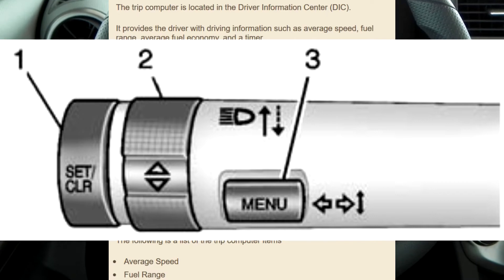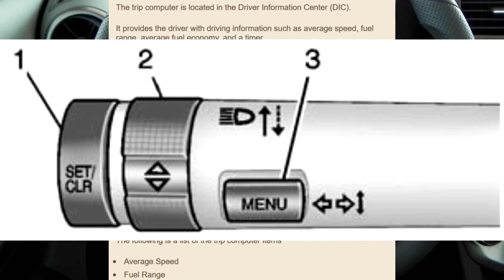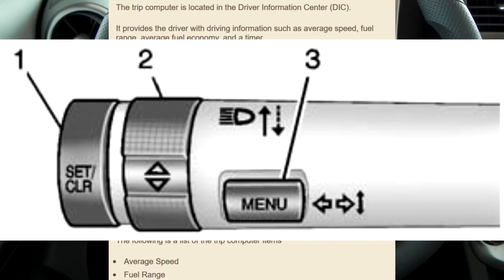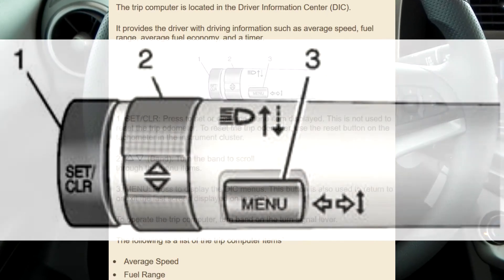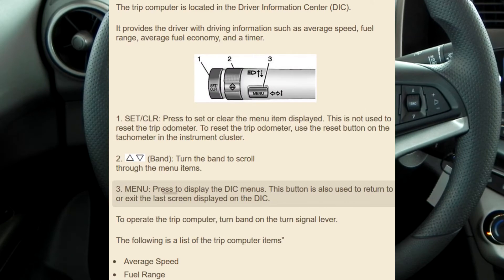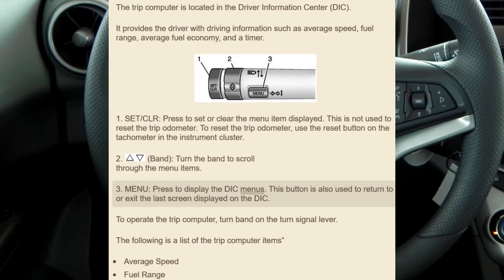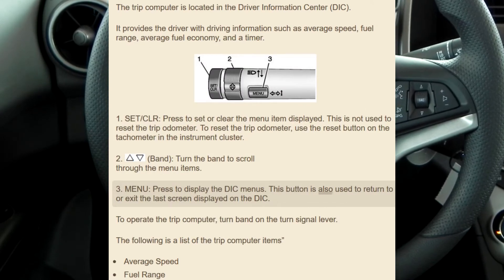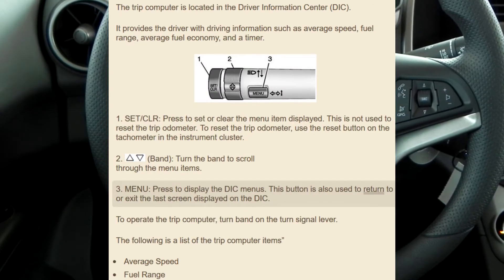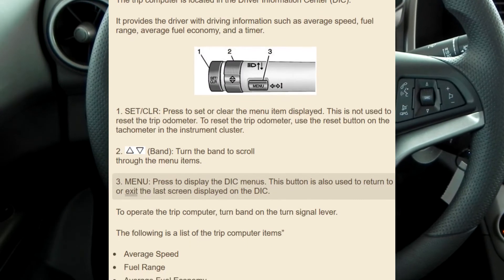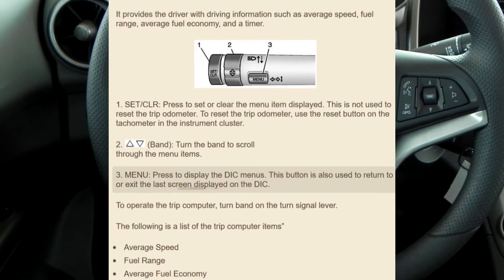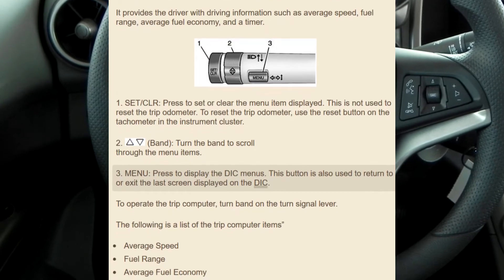2. Band — turn the band to scroll through the menu items. 3. Menu — press to display the DIC menus. This button is also used to return to or exit the last screen displayed on the DIC.